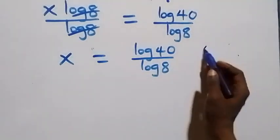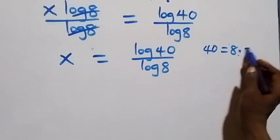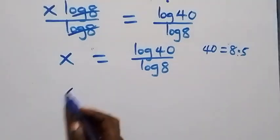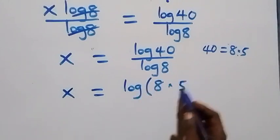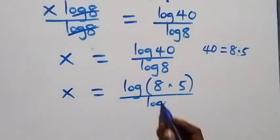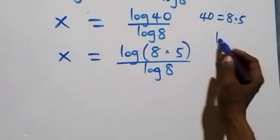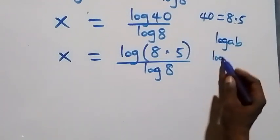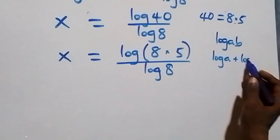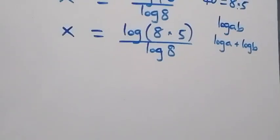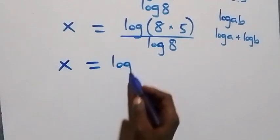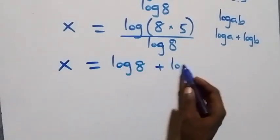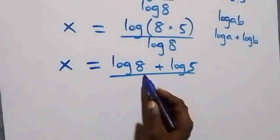Next we express 40 as 8 times 5, so we have x equals log(8 times 5) over log 8. This follows from the law of logarithms: log(a times b) is the same as log a plus log b. So this becomes x equals (log 8 plus log 5) over log 8.